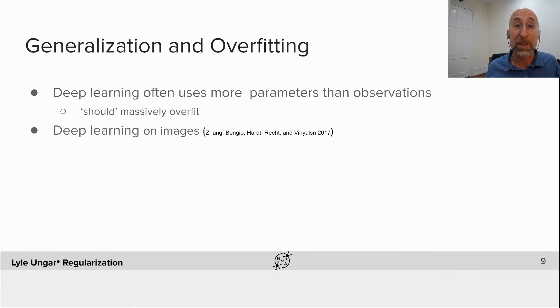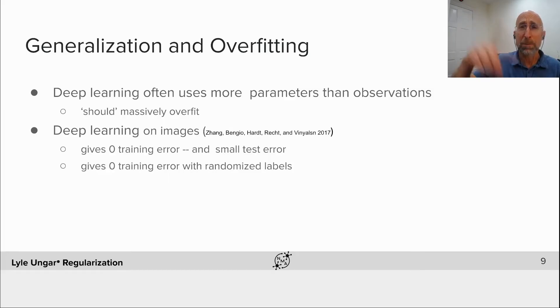Now, amazingly, and we'll see today, if you fit on images, brain images, any sorts of images, it is the case that you can train a neural net to give zero training error, which should be way overfitting, should do horribly, and yet still get small test error on future brains or images if we do things right. You could also fit pure randomized noise. If you randomly permute the labels on the brains, are they Alzheimer's or not, you can still memorize sheer randomness. So we have sort of too much power.